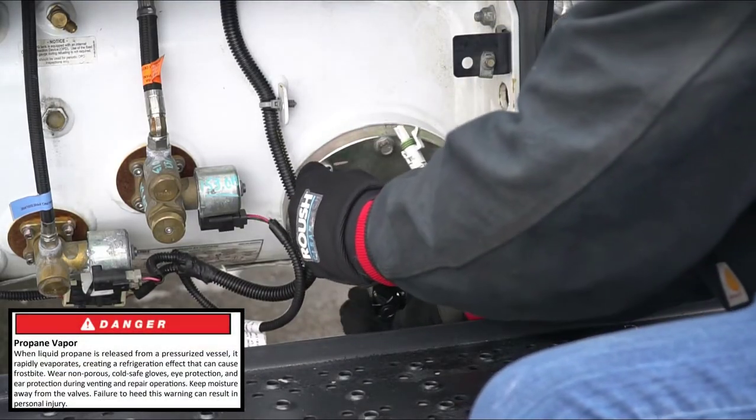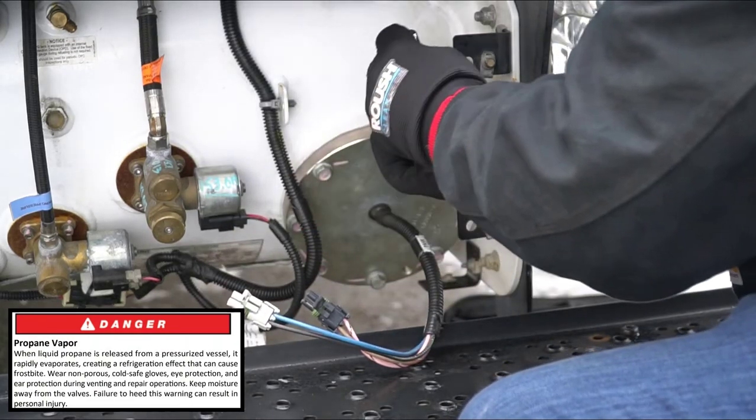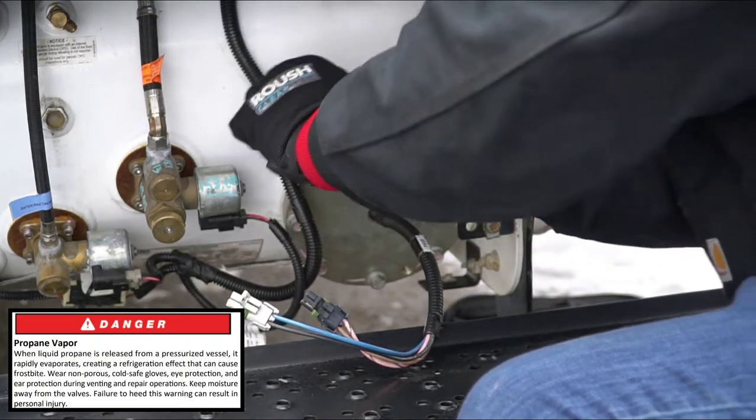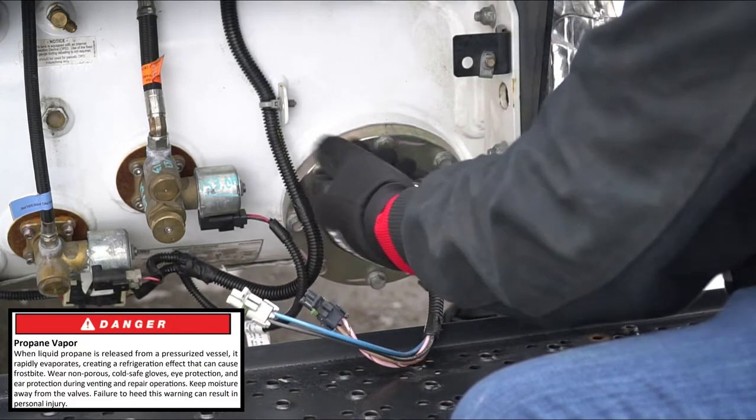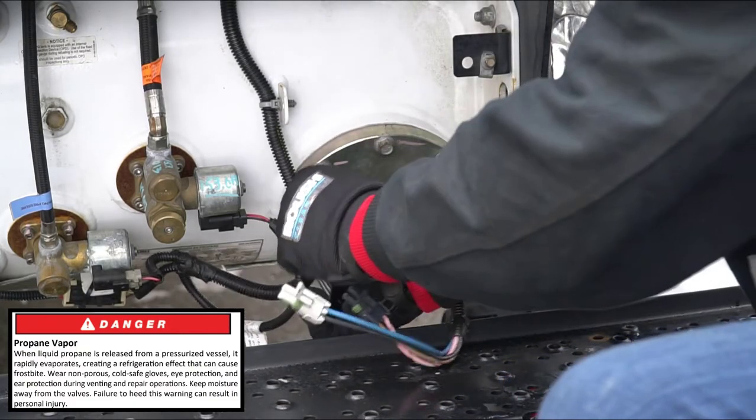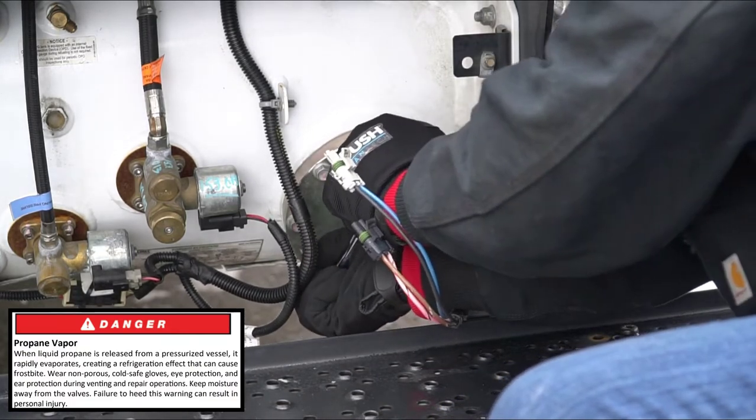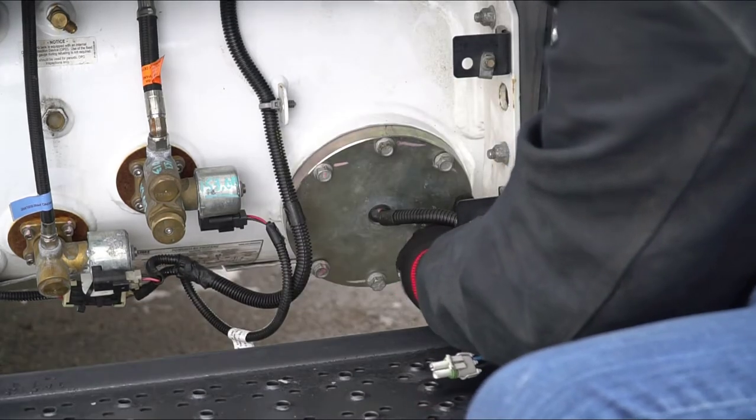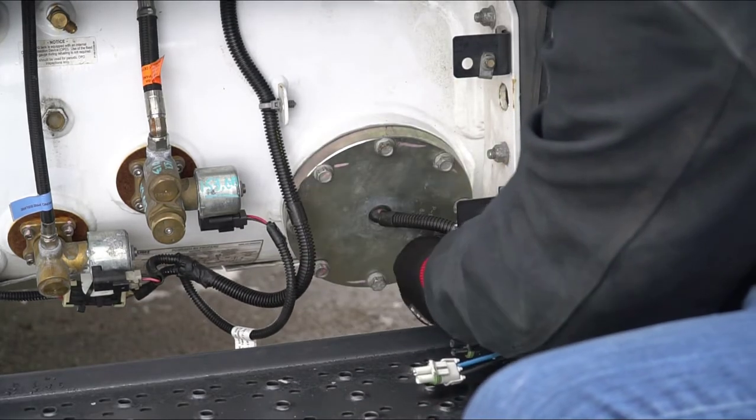Using hand tools, slowly loosen the screws securing the access flange in small star pattern increments. When opening or working inside the tank, do not use power tools to prevent a possible source of ignition. Continue removing the screws until the flange is loose enough to wiggle.